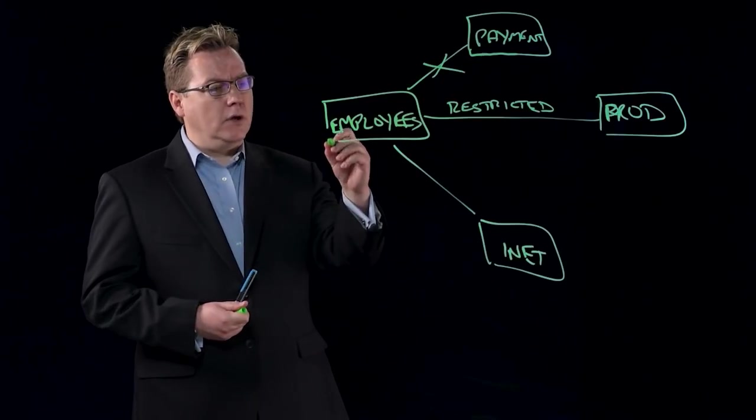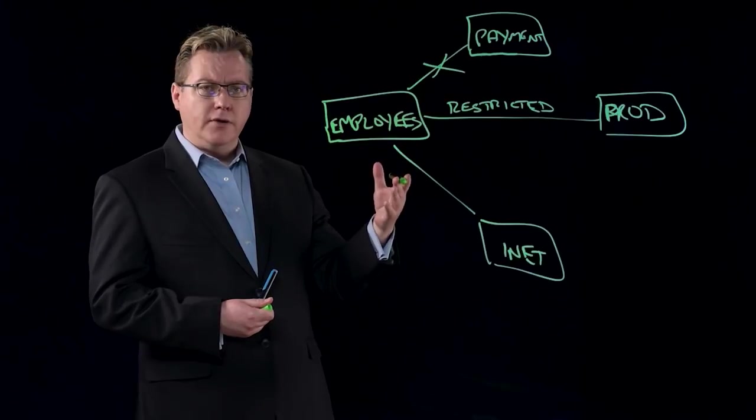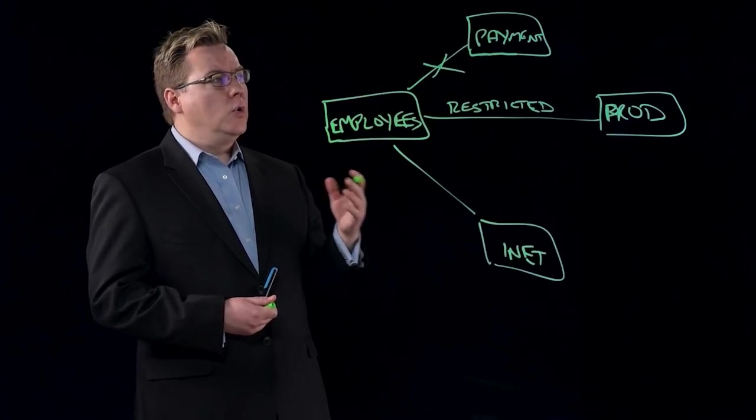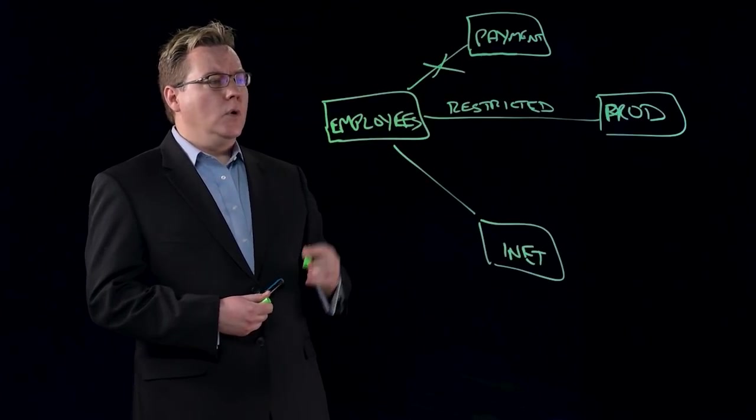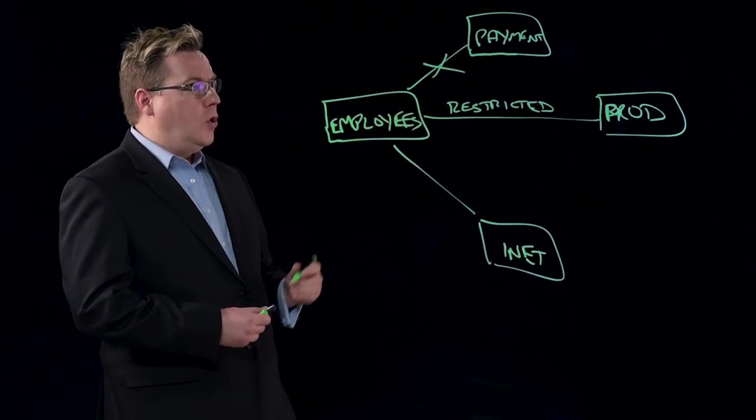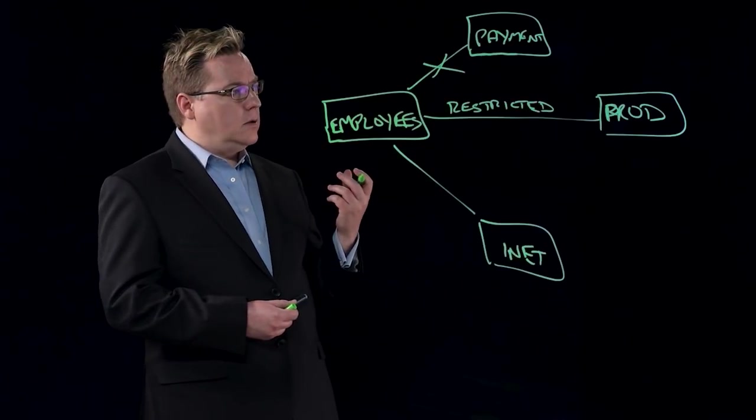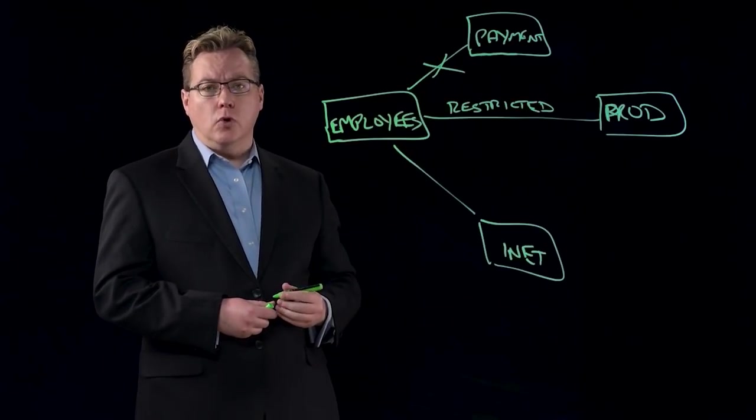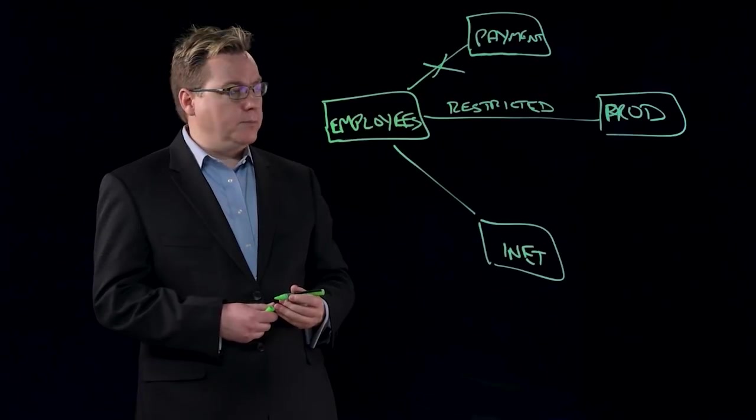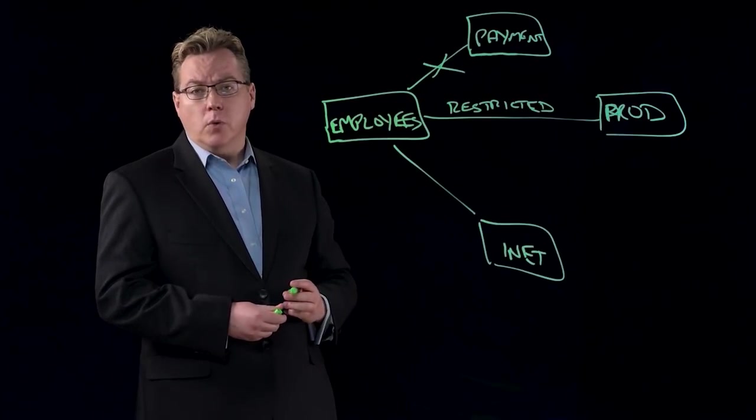So it is hard to know actually whether your policies are working in the way that you thought they were. So by deploying Stealthwatch and understanding, and modeling the policies, and then looking at the actual conversations that occur, we're able to understand whether, for example, employees are ever talking to the payment service, or whether they're talking to production in outside of what would be considered the normal policy, the restricted policy that we've put in place. In other words, whether your firewalls are working in the way you think they are.